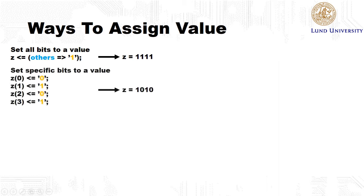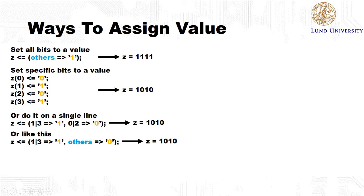We could set individual bits of the vector to some specific value, like this. Or we can do it on a single line with this more compact notation. So this will set bit 1 and 3 to 1, and bit 0 and 2 to 0. Or we can do it like this, where we set bit 1 and 3 to 1, and all other bits of set to 0.